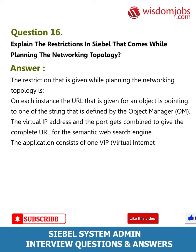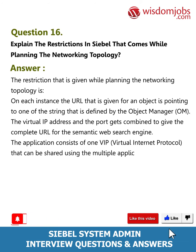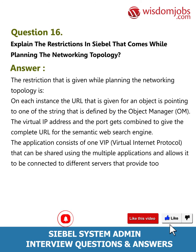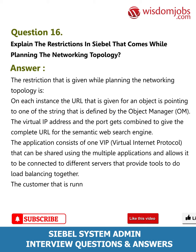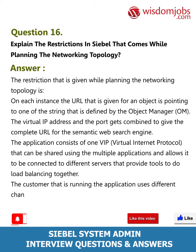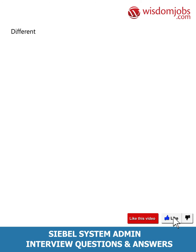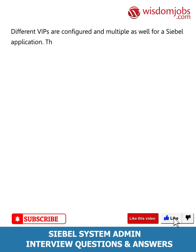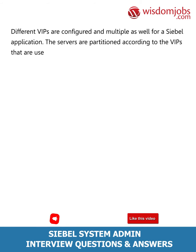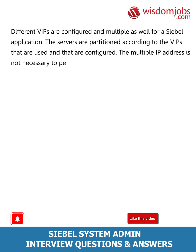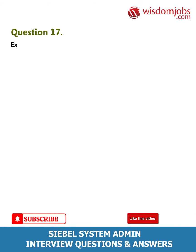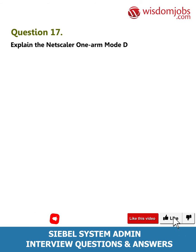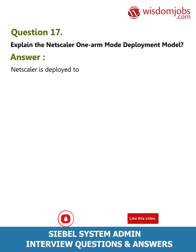The application consists of one VIP (virtual internet protocol) that can be shared using multiple applications and allows connection to different servers that provide tools to do load balancing. The customer running the application uses different channels through partitioning. Different VIPs are configured for a Siebel application, and the servers are partitioned according to the VIPs configured. Multiple IP addresses are not necessary to perform the job.